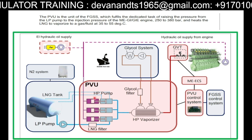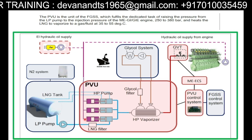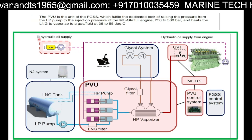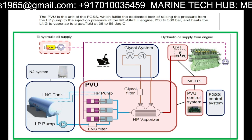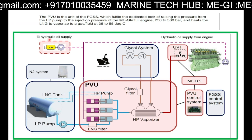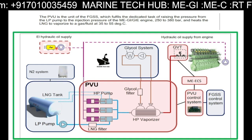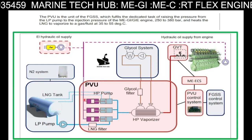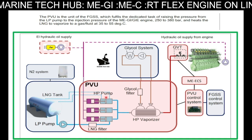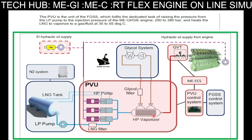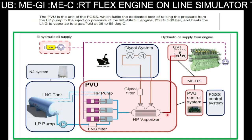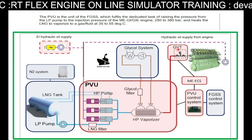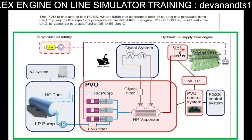Looking at this HP pump, it is operated by the hydraulic system — hydraulic oil supply. This hydraulic oil supply can be run electrically. The hydraulic oil supply activates the HP pump. From the HP vaporizer, the gas comes up to the GVT — that is the gas valve train.